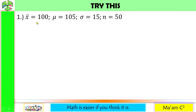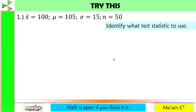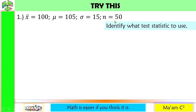Let us try this. Sample mean is equal to 100, population mean is 105, sigma is equal to 15, and the sample size is equal to 50. Step 1: identify what test statistic to use. Since we are given the population standard deviation and our sample size is greater than 30, we are going to use Z-test.